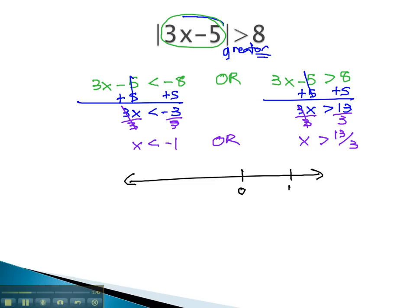Graphing this on a number line, we know with the absolute value, the or is always gonna be on the outside of the two numbers going towards positive and negative infinity. So from negative 1 with an open circle, because it's just less than, we know we must go down. From 13 thirds with an open circle, we know we must go up.